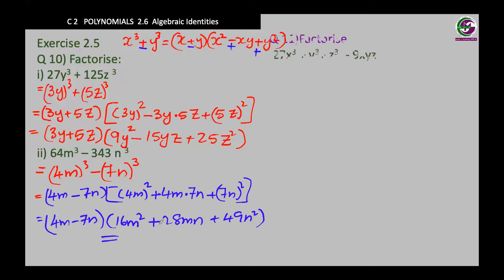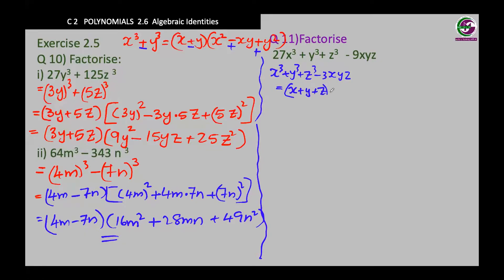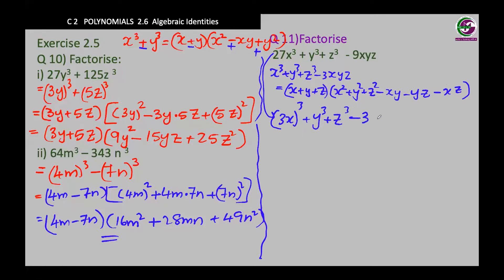Moving on to question 11 — again, factorize. Can you compare this with one of the identities you have learned? Excellent! This is related to x cube plus y cube plus z cube minus 3xyz. The expansion has the first three terms without any power in the first bracket, and in the second bracket with powers of all three terms. You know that 27 doesn't have a power shown, so we rewrite the polynomial as 3x cubed, second term without a number, minus 3 times the product of the three terms.